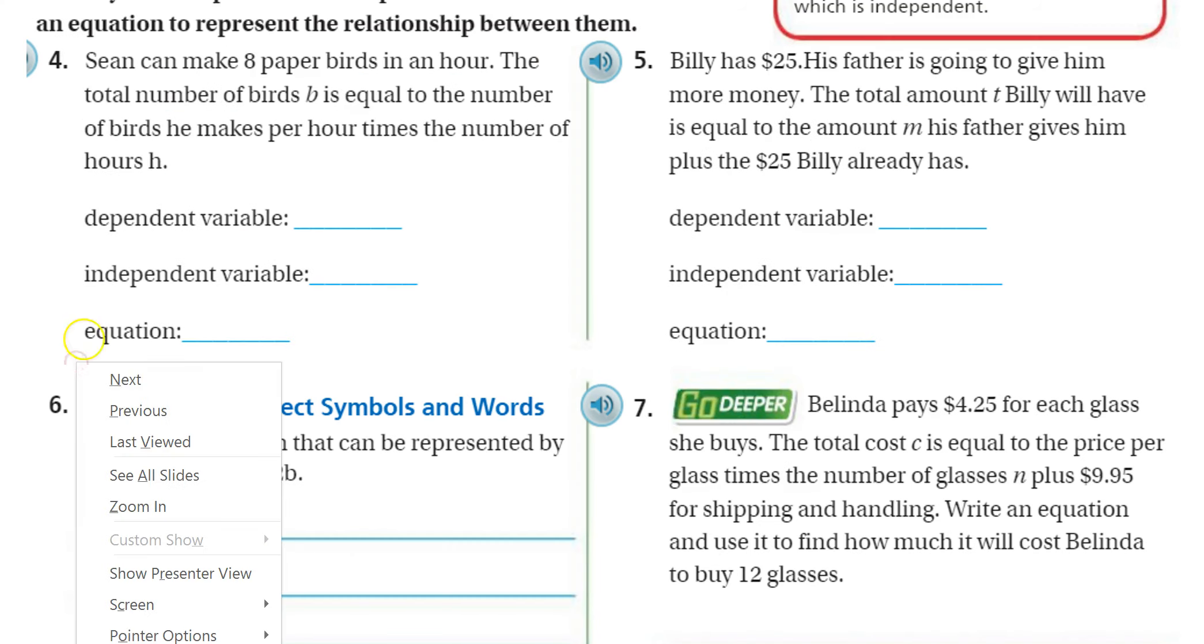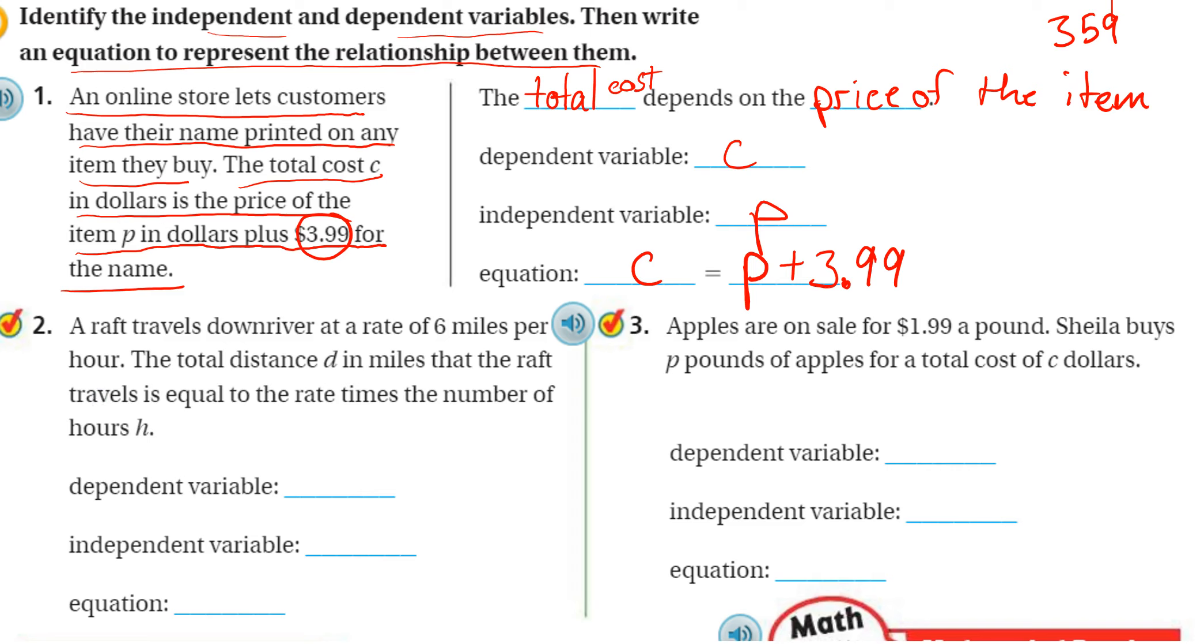Okay, and continuing, let's look at another example. A raft travels downriver at a rate of 6 miles per hour. The total distance, D in miles, that the raft travels is equal to the rate, times the number of hours.